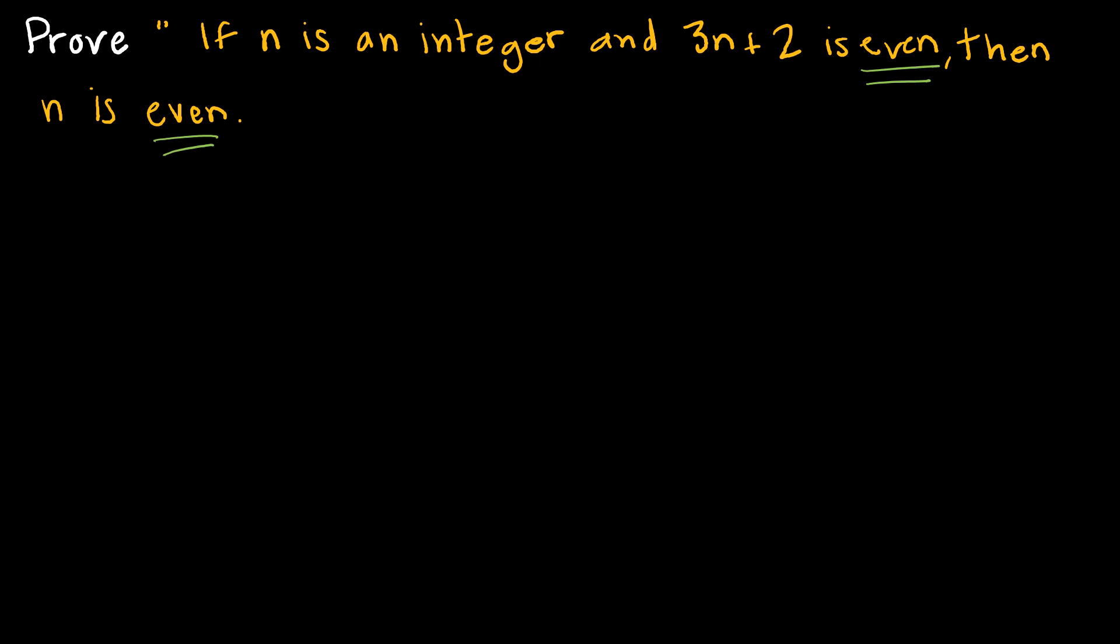So again, if we use contraposition, we start with the assumption that the consequent is false. So we're saying assume N is not even, or N is odd. So we can rewrite N as 2K plus 1 for some integer K.